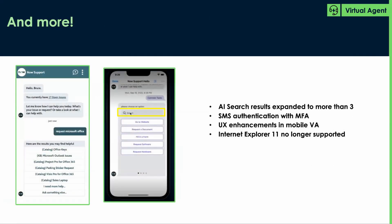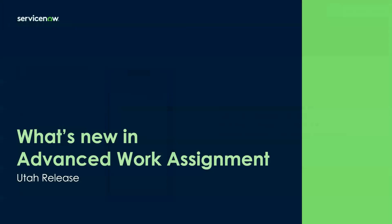There are many more miscellaneous things worth calling out. AI search results have now expanded to more than three results at a time in virtual agent. We've enabled SMS authentication with MFA if you're using text as a channel. We're providing multiple UX enhancements in mobile virtual agent. And a quick call-out: Internet Explorer 11 is no longer supported on virtual agent in the Utah release, so I'd suggest migrating to either Edge, Firefox, or Chrome. That's all I have for virtual agent in Utah.